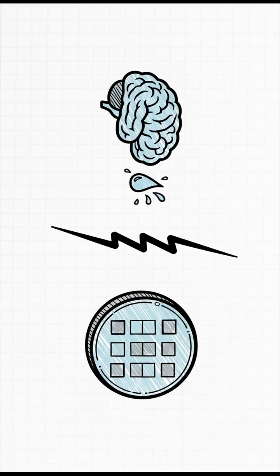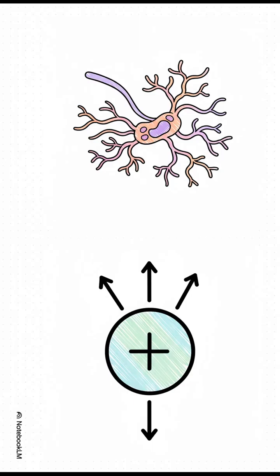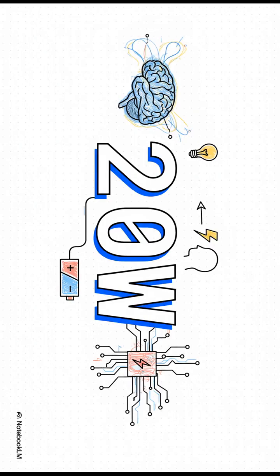The very stuff they're made of is completely different, and that changes pretty much everything. Get this, just one of your neurons is way more complex than an AI's. It's like its own tiny computer. Now, what about power?